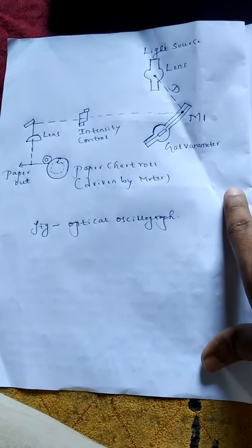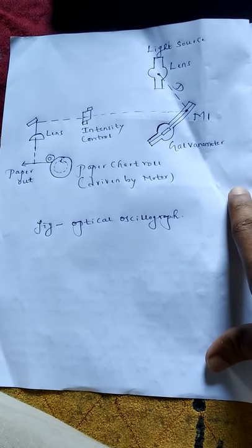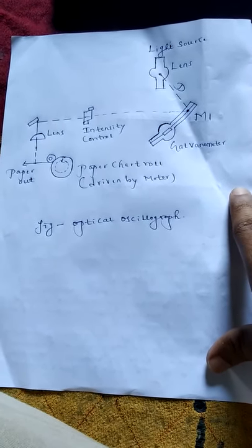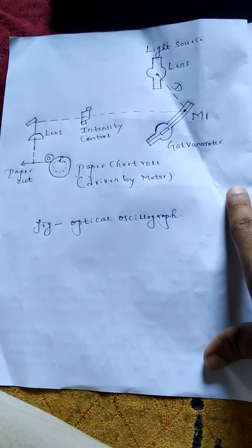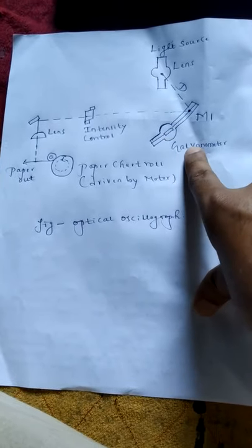Second point, a beam of high intensity ultraviolet light is focused through a suitable collimating lens system on a mirror mounted on the coil of galvanometer.